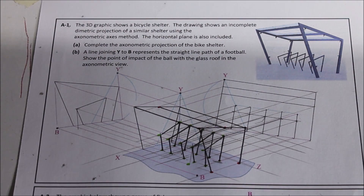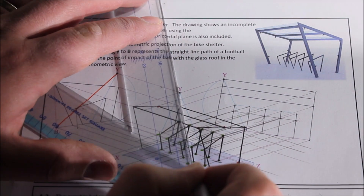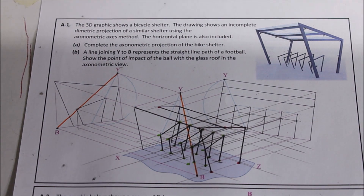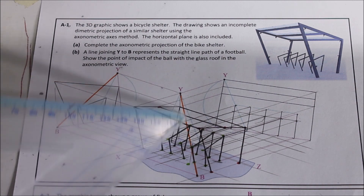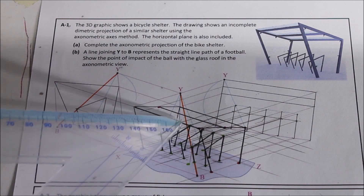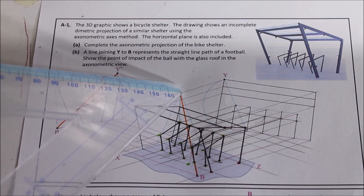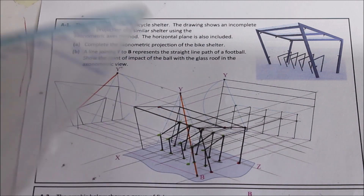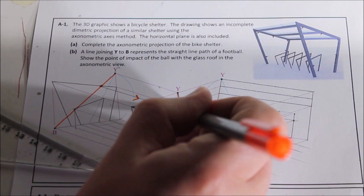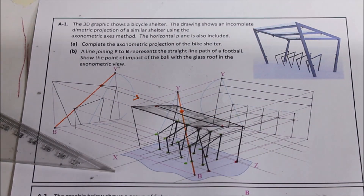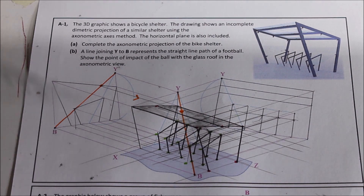The point of impact of the ball with the glass roof in the axiometric view — let's draw the line in first. That orange line represents our line Y to B. As you can see from the end view, you can see exactly where it crosses the glass roof. In the axiometric view you couldn't really guess where it's going to hit, but if you put in this end view of the line you can clearly see it crossing the roof here. Checking that point back down, it will clearly show you the point where the ball hits the glass roof. Part A done — clearly showing the point where it hits the glass roof. Straightforward enough as an axiometric question. As I said in the predictions video, this came up last year and the year before that, so there's a possibility of it coming up three years in a row.